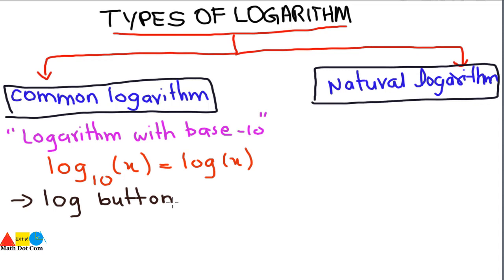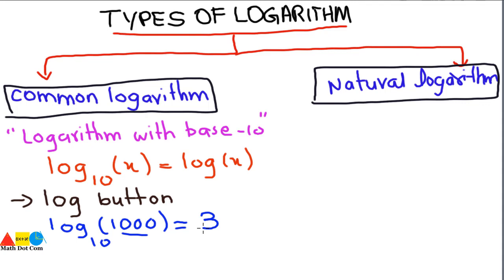Let's have a few examples of how you can calculate the common log. If you are given log of 1000 — the base is not written, so it is obviously ten — this means how many times you have to multiply ten to get 1000. You have to multiply ten three times, so log base ten of 1000 equals three. Similarly, log base ten of 10000 equals four, because you multiply ten four times to get 10000.